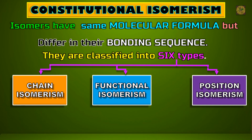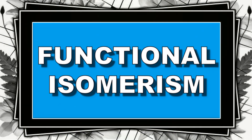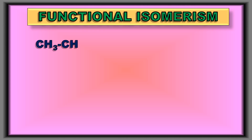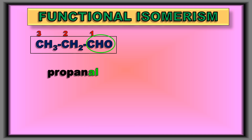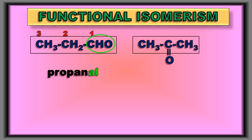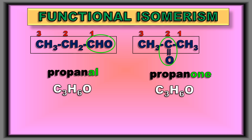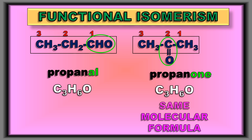The third one is functional isomerism. It is another interesting isomerism where the molecular formula might be the same, but the only difference is the nature of the functional group. The first example is an aldehyde with a propane skeleton. The second example is a ketone with the same propane skeleton, and the molecular formula too is the same — C3H6O. They differ only in the functional group.